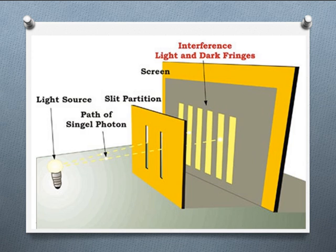Now Newton's theory of light was that it behaved like particles, and it was very much the accepted standard for what light was. Had that theory been correct, then we would expect to see from each slit one beam of light — one beam from the far slit and a second beam from the other slit.